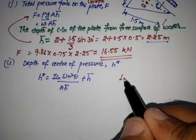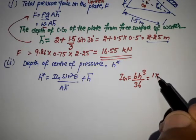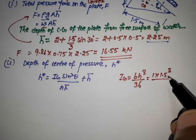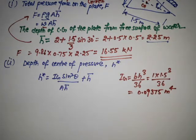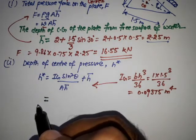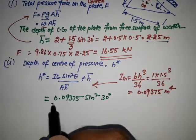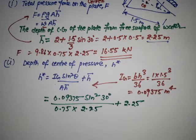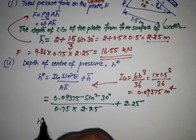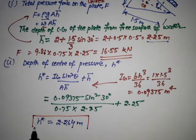For a triangular surface, IG = bh³/36. With b = 1 meter and h = 1.5 meters: IG = (1 × 1.5³) / 36 = 0.09375 m⁴. Substituting into the h* equation: h* = (0.09375 × sin²30°) / (0.75 × 2.25) + 2.25, which gives h* = 2.264 meters. This is the position of the center of pressure from the free surface of the liquid.